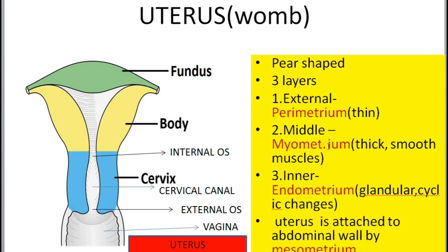The innermost layer is the endometrium, which is glandular and undergoes cyclic changes during the menstrual cycle. It is highly vascular, with blood vessels richly supplied to this region. The middle myometrium is thick, consisting of smooth muscles. The contractions of these smooth muscles are useful for delivery to expel the baby, and labor pains are due to the contraction of these smooth muscles.